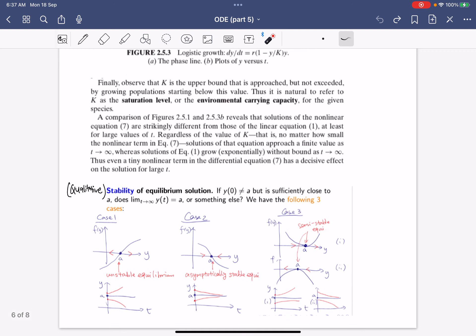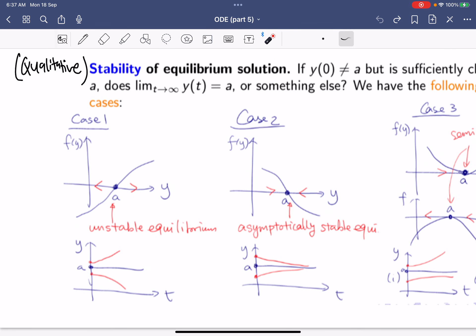Qualitatively, the stability of an equilibrium solution is given as follows. You have the first case, which is the graph is increasing this way and this way out. You just draw the phase line and see.